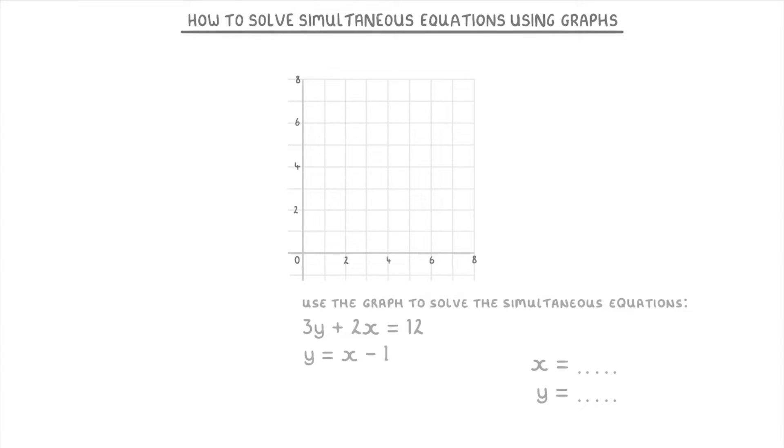So if we were given this question, the first thing we need to do is plot the lines 3y + 2x = 12 and y = x - 1. Once we have our lines, we need to find the point where they intersect, which is this point here. Because this point has an x value of 3 and a y value of 2, our solution is x = 3 and y = 2.